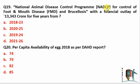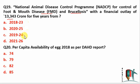NADCP is a program to control FMD (Foot and Mouth Disease) and Brucellosis, with a financial outlay of around 13,000 crores for five years from 2019 to 2024. So this program runs from 2019 to 2024 — five years to eradicate FMD and Brucellosis.